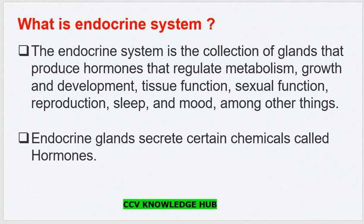The endocrine system is the collection of glands that produce hormones that regulate metabolism, growth and development, tissue function, sexual function, reproduction, sleep and mood, among other things.